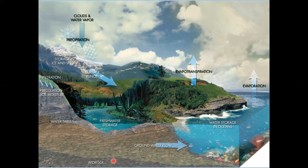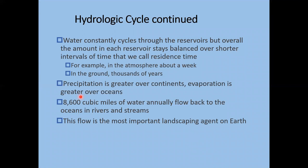Eventually everything flows back to the ocean. Water has different durations it stays in these reservoirs — we call that residence time. In the atmosphere, water stays about a week. In the ground it can be thousands of years, especially in deeper aquifers. In glaciers it can also be thousands of years. Precipitation is greater over continents; evaporation is greater over oceans. About 8,600 cubic miles of water annually flow back to the oceans in rivers and streams.